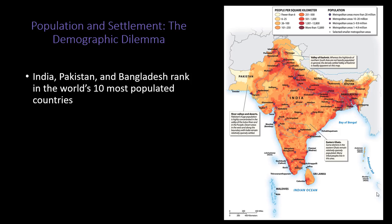As we talked about, this is the second most populous region in the entire world. The countries are Maldives, Sri Lanka, India, Nepal, Bhutan, Bangladesh, and Pakistan — so that's seven countries. Three of these seven countries are actually ranked in the world's ten most populated countries: India, Pakistan, and Bangladesh.